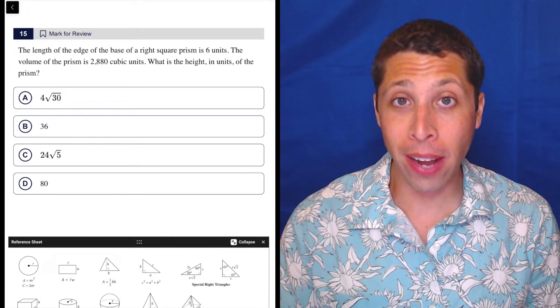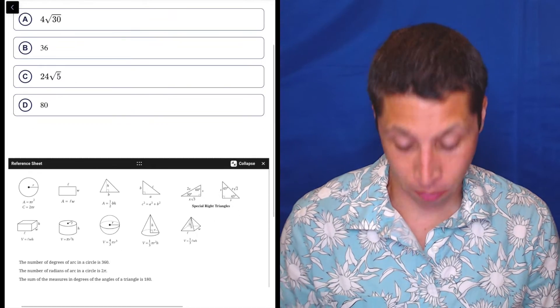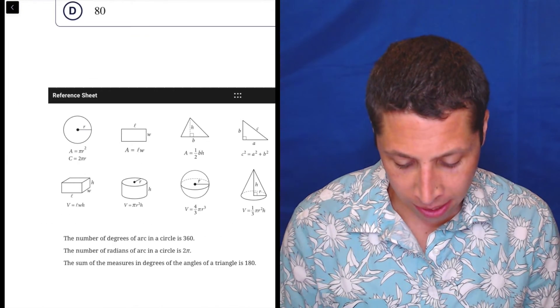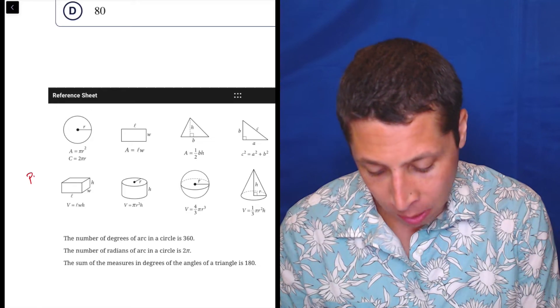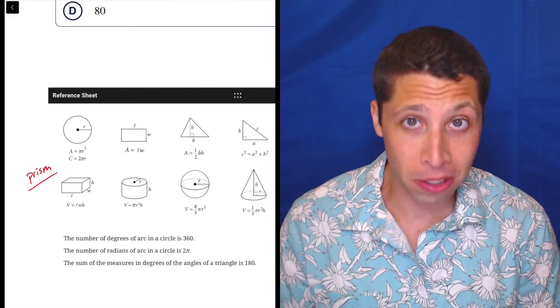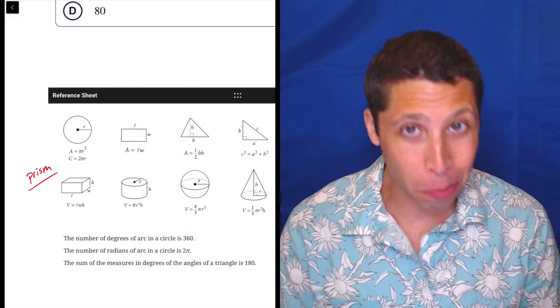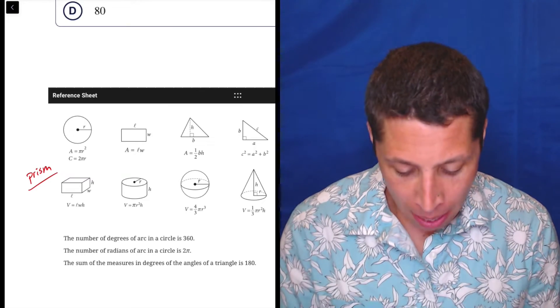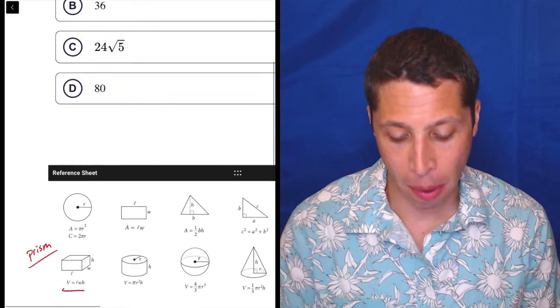Well, if you don't know how to find the volume of a prism, they give it to you in the reference chart. You can see this right here is a prism. It is what you might call a box, but yeah, it's a rectangular prism. A right-square prism is going to get a little bit more specific. Length times width times height, so volume is nice and easy to remember.